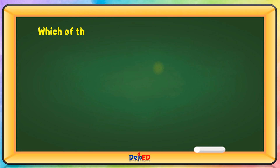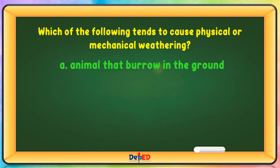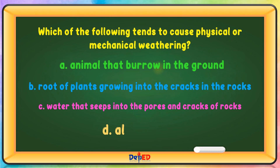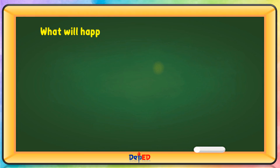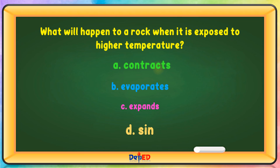Which of the following tends to cause mechanical weathering? A. Animals that burrow in the ground. B. Roots of plants growing into the cracks in the rock. C. Water that seeps into the pores and cracks of rocks. D. All of these. The correct answer is D. What will happen to a rock when it is exposed to higher temperature? A. Contracts. B. Evaporates. C. Expands. D. None. The correct answer is C.